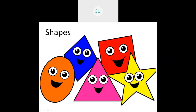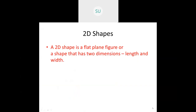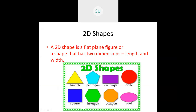Plane shapes or 2D shapes are nothing but plane figures or shapes which have two dimensions — that is the length and the width. We saw so many different shapes last time: triangle, pentagon, rectangle, circle, square, hexagon, octagon and an oval. But mainly we focused on the triangle, rectangle, circle and square.